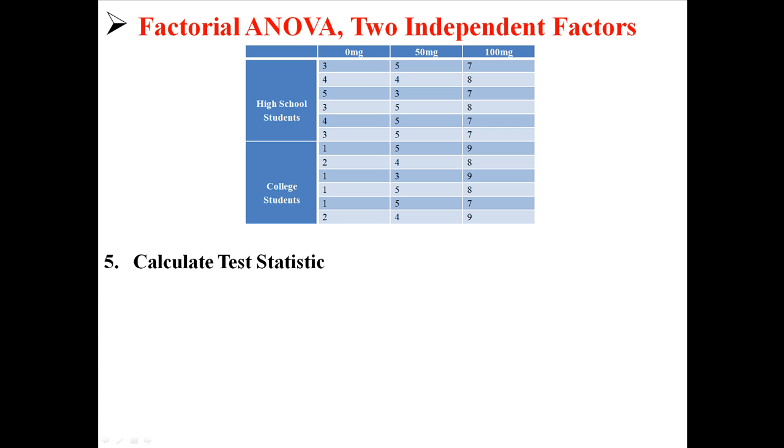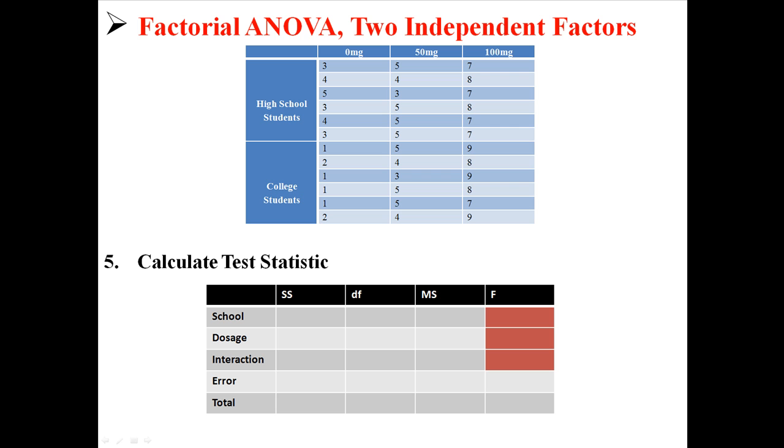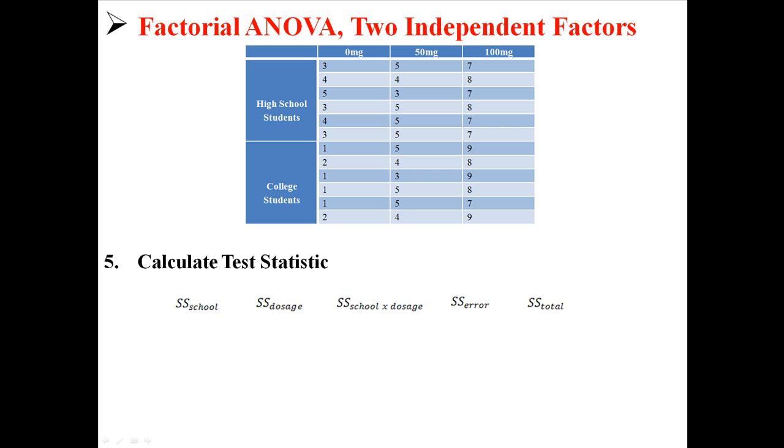So now we can calculate our test statistic. In order to do that, we need to fill out this table. We already have the degrees of freedom, so I'm just going to put that in there. And now we need to find the sum of squares. We need to find sum of squares for school, for dosage, for the interaction, for the error, and for the total.